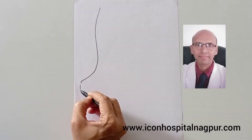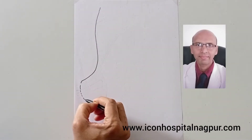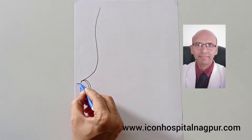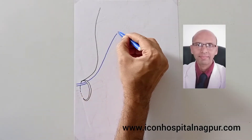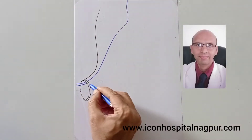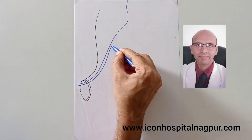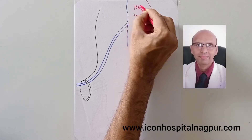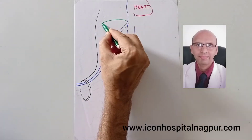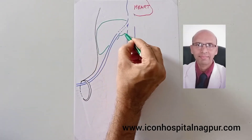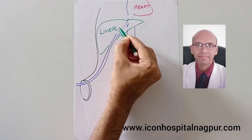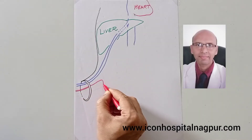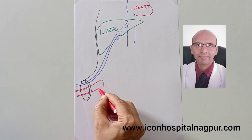This video demonstrates the important structures which are present in the umbilicus. The first structure is the umbilical vein, and it is directly communicating with the heart through the liver.